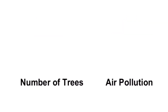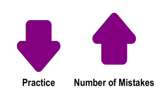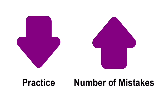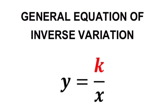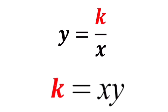Now let's look at another example. Practice and number of mistakes are inversely proportional to each other, which means that the more we practice, the fewer mistakes we commit. On the other hand, the less we practice, the more mistakes we make. So these two are inversely proportional to each other. We also remember that the general equation for an inverse variation is y equals k over x, where k is called the proportionality constant. To find k, we rearrange the equation as k equals x times y.